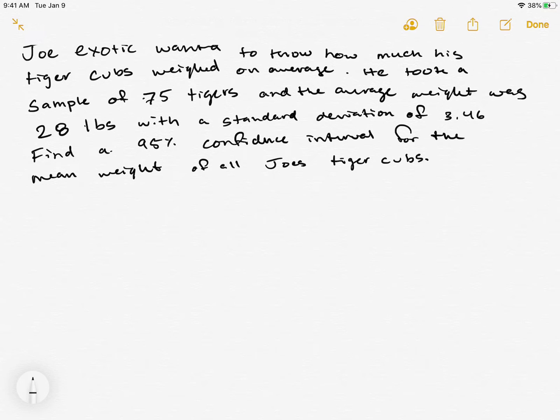What we want to do for all these one sample confidence intervals is going to be x-bar plus or minus our z critical value multiplied by our standard error, which is the standard error of x-bar.